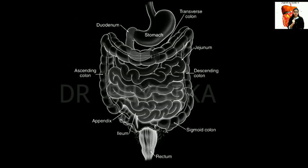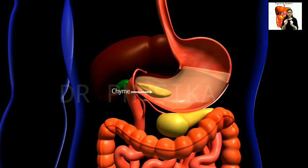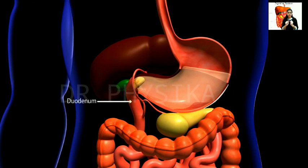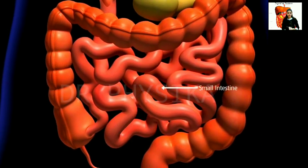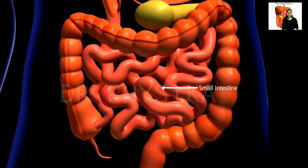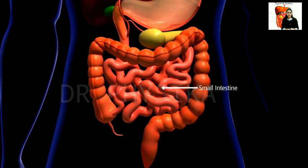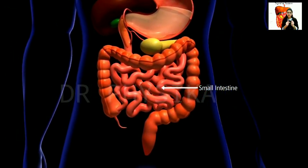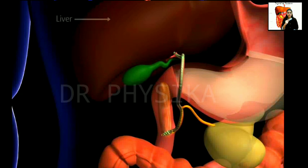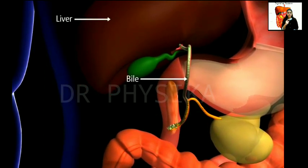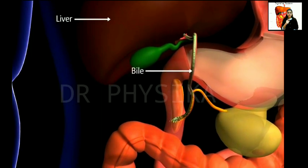Now let us learn about digestion in the small intestine. The pepsin enzyme converts food into a thick paste called chyme. From the stomach, food travels via sphincter muscles to the duodenum, which is part of the small intestine, and finally food enters the small intestine. The small intestine is a major site of food absorption. It is a long coiled organ that digests proteins, fats, and carbohydrates with the help of different enzymes. The liver releases bile into the small intestine that helps in the breakdown of fats.